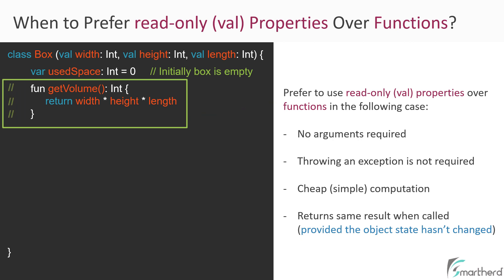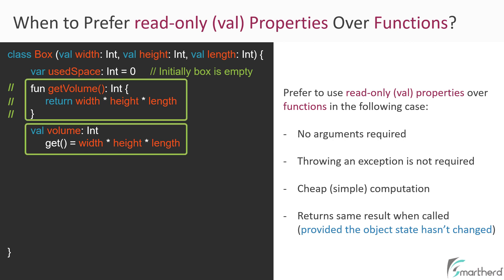So here instead of this function, we should create a read-only property like this. This code and this code are doing almost the same thing. In fact, in terms of performance as well, there would be no change. Both the code will work with equal efficiency. Additionally, if you decompile your code and look at the bytecode of this getter function for this property, you will find that internally the name of this getter function will be exactly same as this getVolume function. So again, in terms of performance, there would be no change.